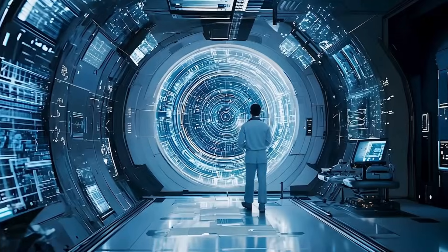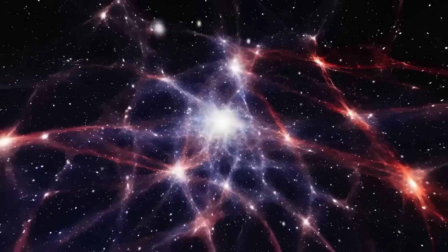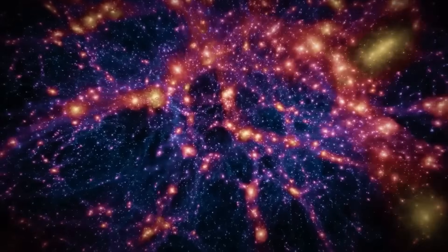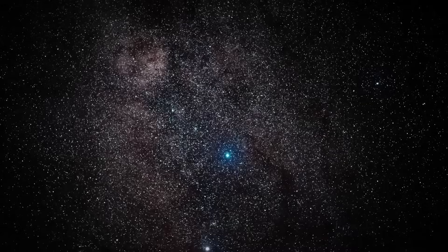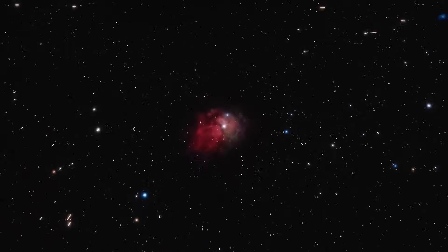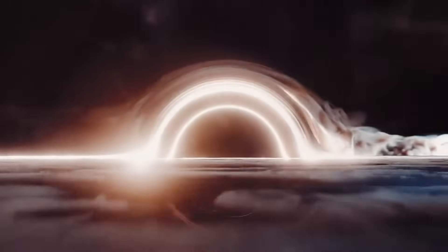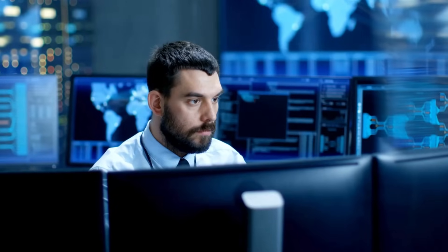Whenever scientists stumble upon something this shocking, the first question is always, is this real or is there a glitch in the data? Maybe these galaxies aren't as ancient as they seem. Could they be closer than expected, just playing tricks with distance and time? Or perhaps the light reaching us is distorted, bent by the immense gravity of other objects, like black holes, through a cosmic trick called gravitational lensing.